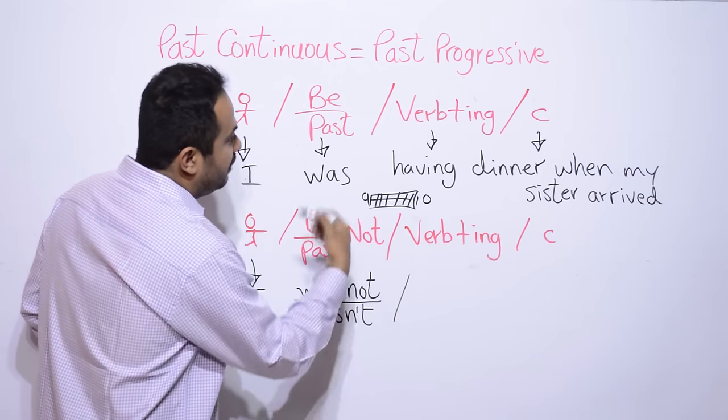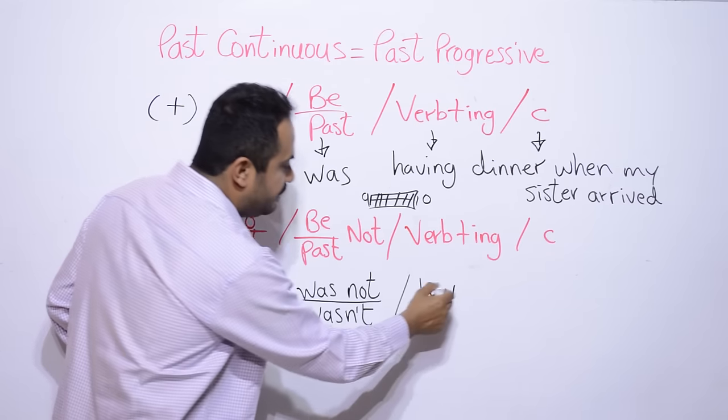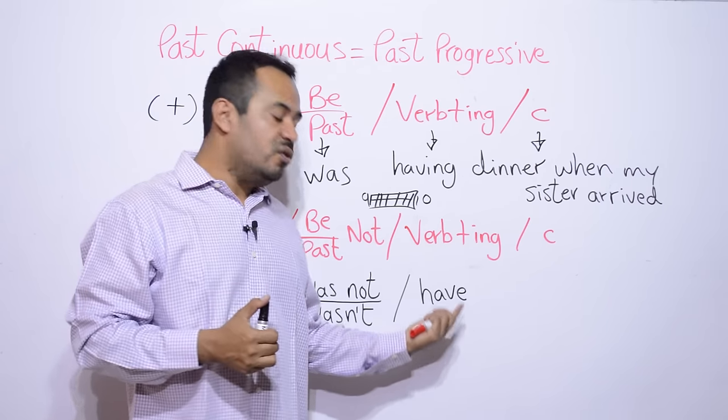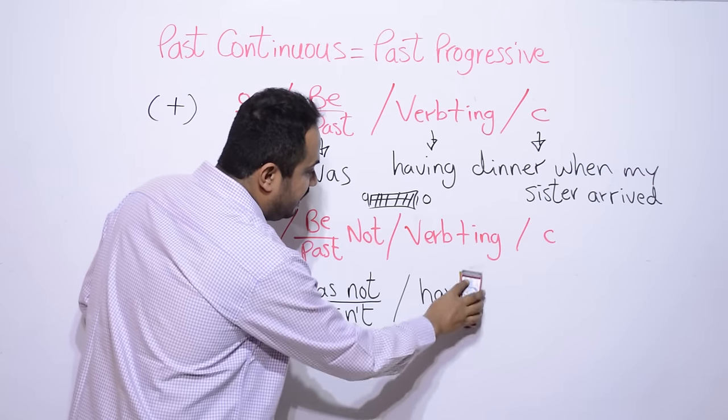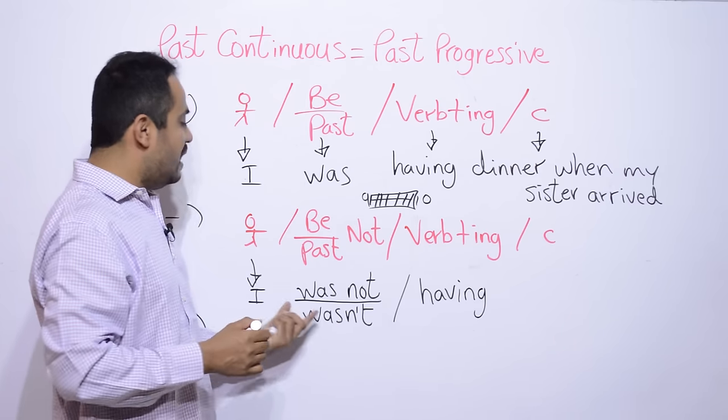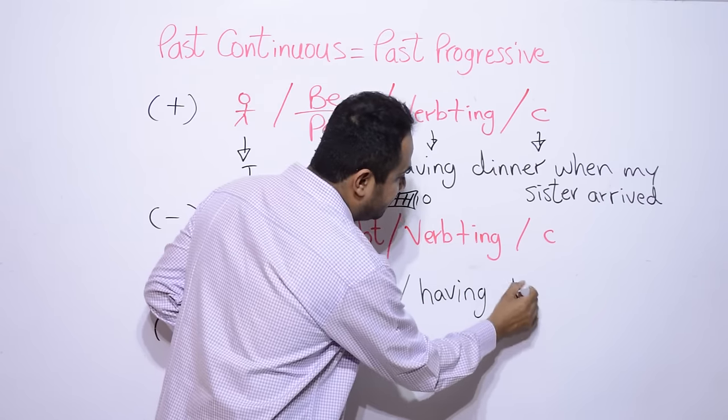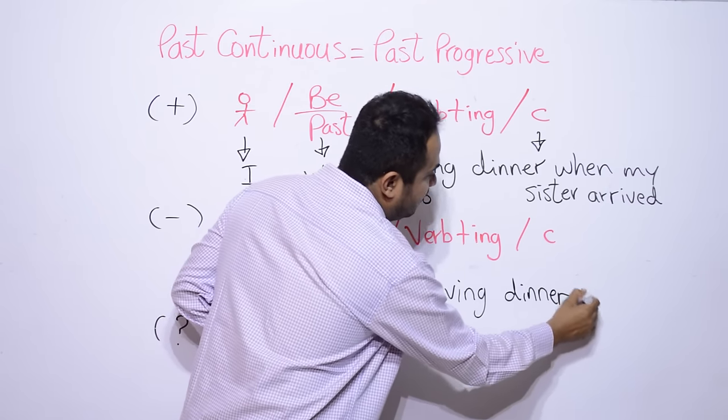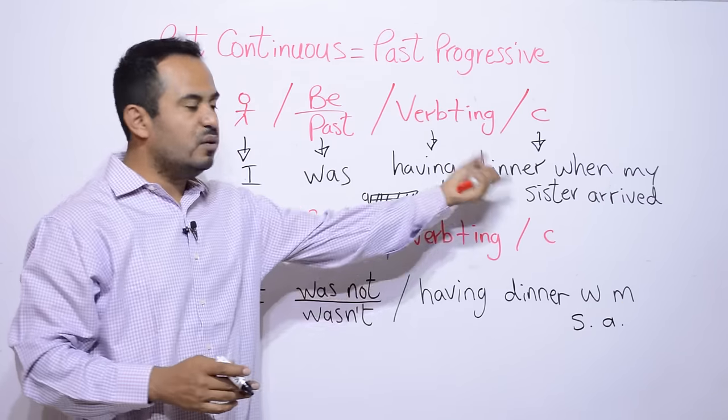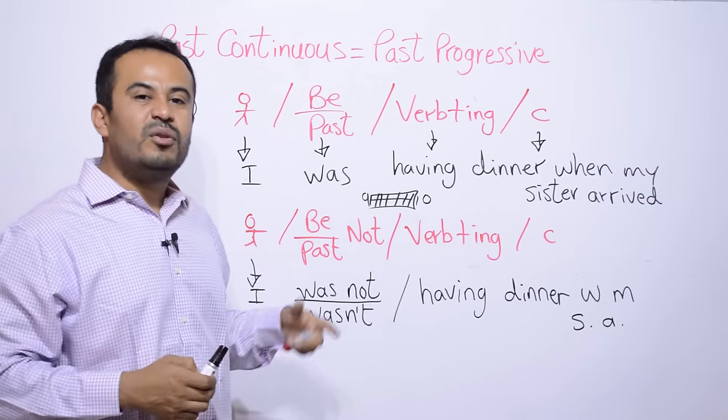Después tenemos un verbo en, con terminación ing, que es having. Bueno, esto no es having. Este viene del verbo have. Es el verbo en su forma base, have. Pero cuando nosotros vamos a convertir un verbo a gerundio, como es el caso de have, tenemos que eliminar la e y agregar ing. Entonces, nos queda having. I wasn't having. Y después, el complemento, bueno, dinner, when, my, sister arrived. Bueno, lo abrevió para no escribir todo. I was not having dinner when my sister arrived. Y ya tenemos nuestra oración en el modo negativo.